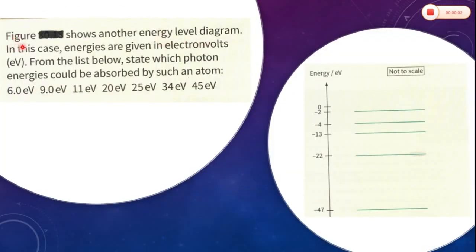Question 2: The figure shows another energy level diagram, with energies given in electron volts. From the list below, state which photon energies could be absorbed by such an atom: 6 eV, 9 eV, 11 eV, 20 eV, 25 eV, 34 eV, and 45 eV. Based on the idea of energy levels, we will calculate the energy of each transition by taking the difference of energies between the levels labeled in the diagram.